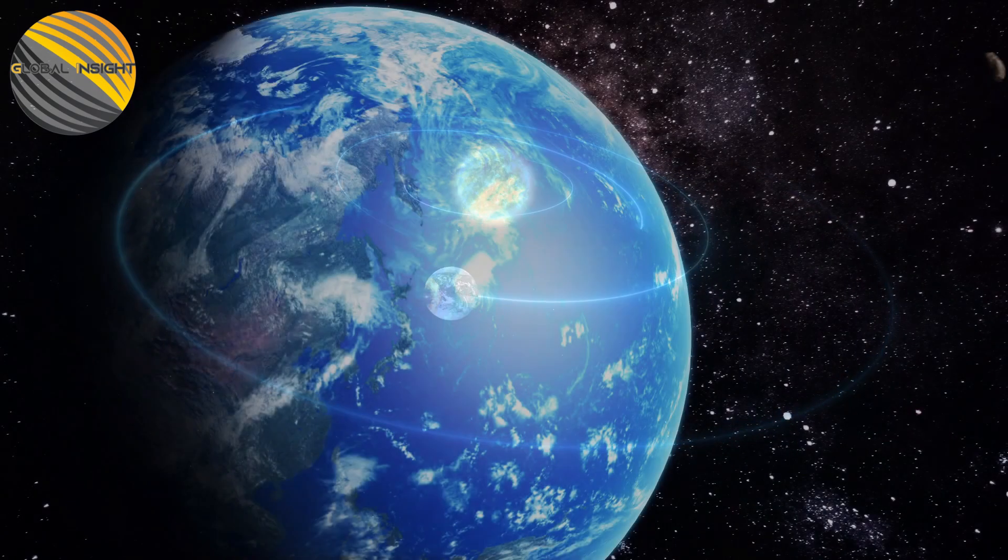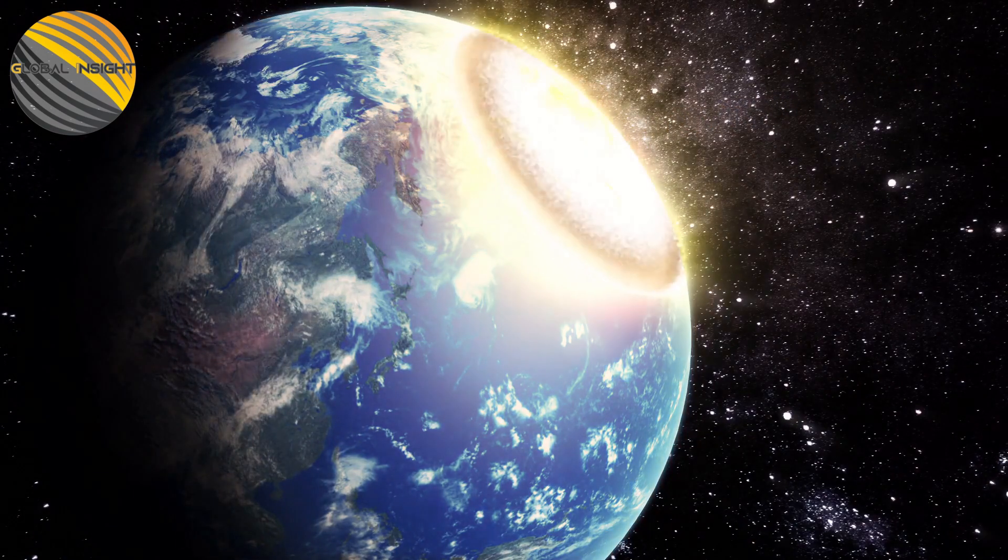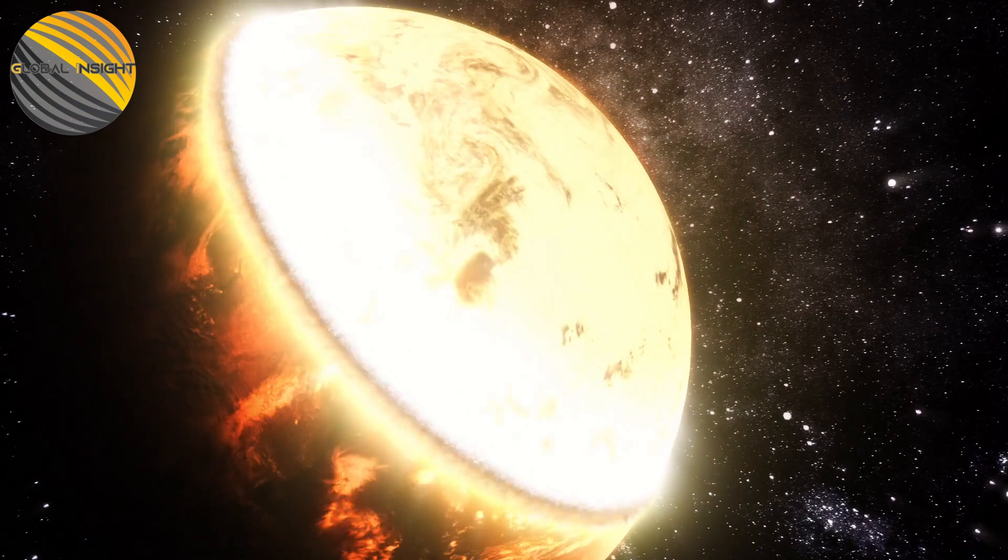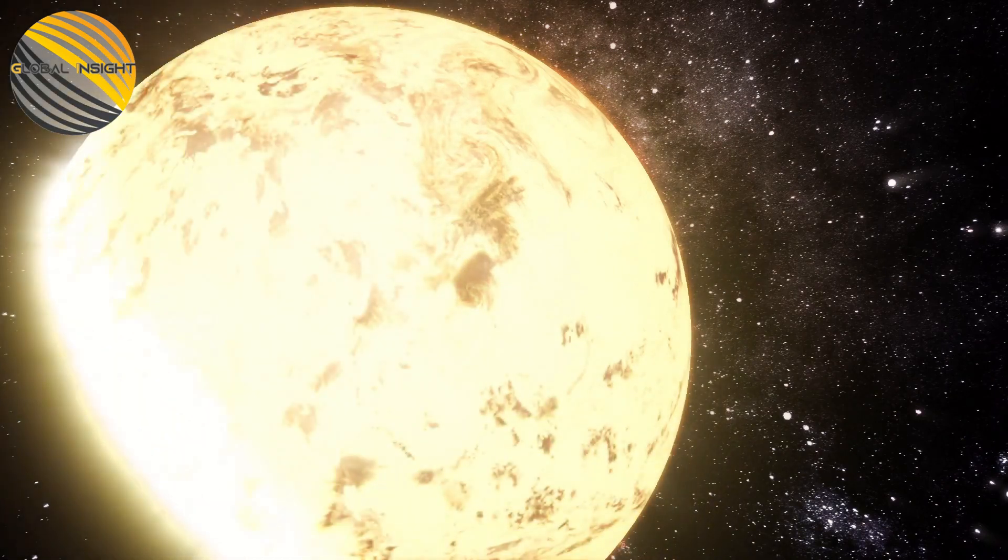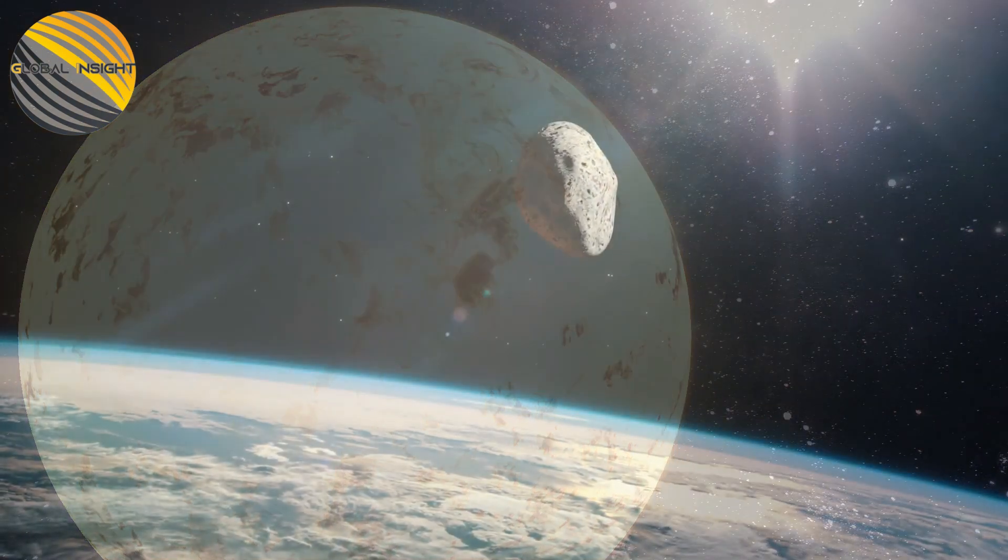Since MapBook was brought online in 2017, it has spotted more than 700 close-Earth space rocks and 66 comets. Two of the asteroids that ATLAS found, 2019 MO and 2018 LA, actually hit Earth.